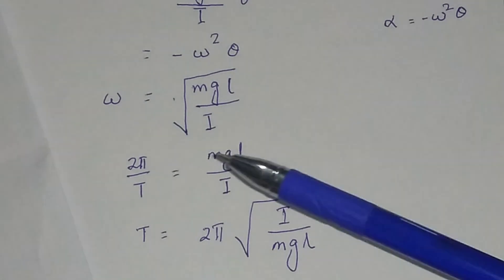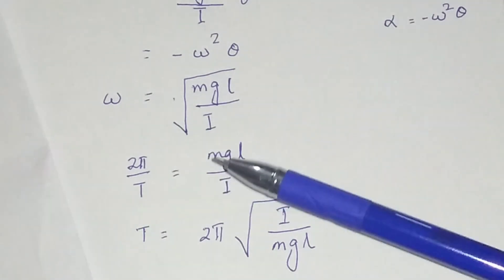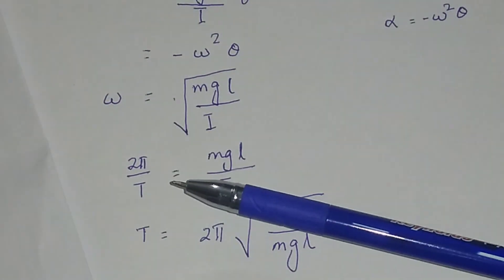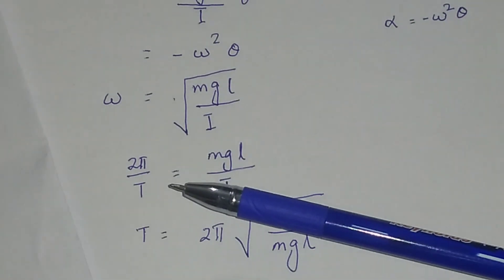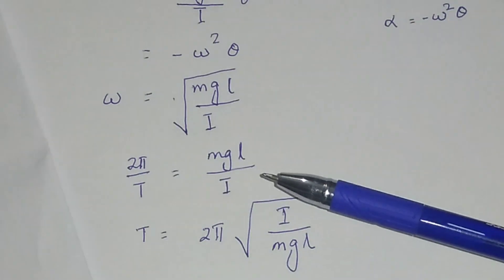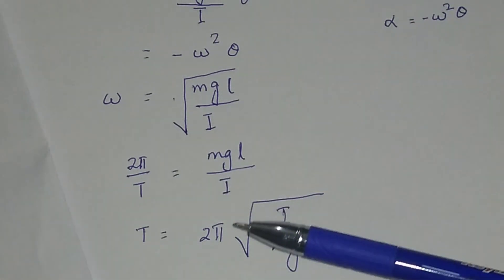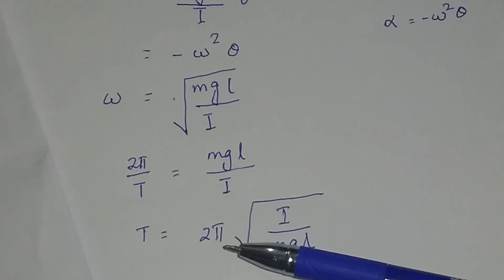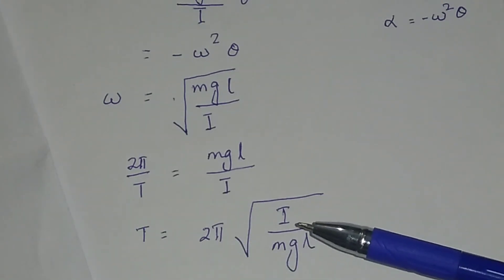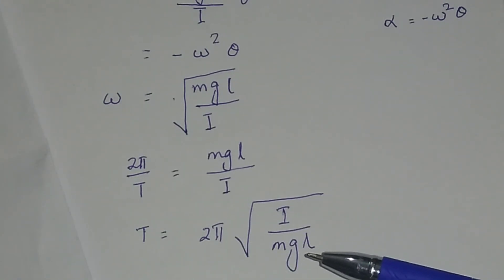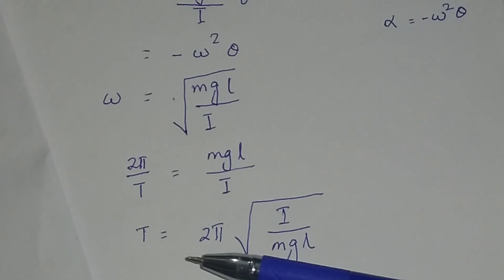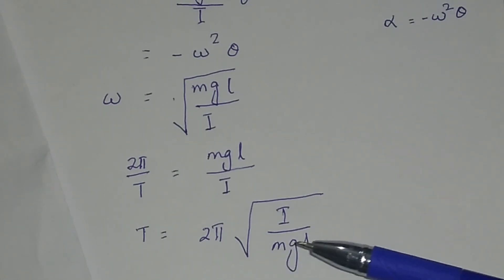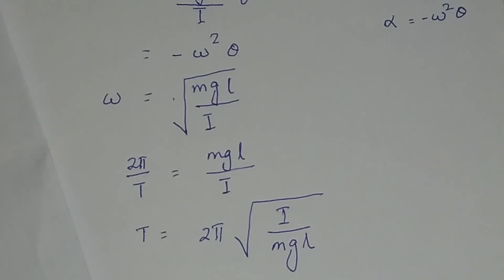Since omega equals 2 pi n or 2 pi by T, and n equals 1 by T, we get 2 pi by T equal to the square root of mg l divided by i. Therefore, T will be equal to 2 pi times the square root of i divided by mg l. This is the expression for the time period of the compound pendulum or the bar pendulum.